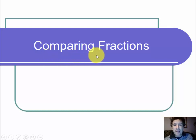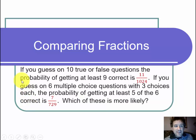This is a video on comparing fractions. The question states, if you guess on 10 true or false questions, the probability of getting at least 9 correct is 11 over 1024.